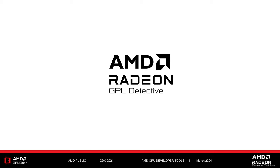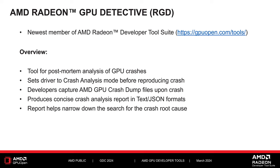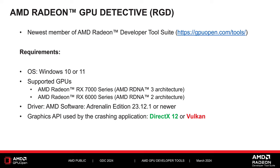That's all about RMV. Now we are excited to showcase Radeon GPU Detective. Radeon GPU Detective, or RGD for short, is a new member of our Radeon developer tool suite. It is a post-mortem crash analysis tool, which means we set the driver to crash analysis mode before reproducing the crash. Once the crash is reproduced, the tool generates a crash dump file, from which it produces a concise crash analysis report to help narrow down the search for the crash root cause. RGD is supported on Windows 10 and 11, currently supporting Radeon RX 6000 and 7000 series GPUs, with a minimum driver version of 23.12.1. RGD first shipped in August last year supporting DirectX 12, and with the December 2023 release, RGD now supports Vulkan as well.